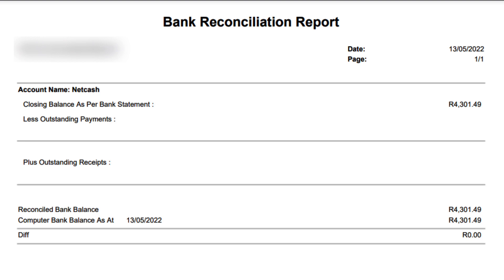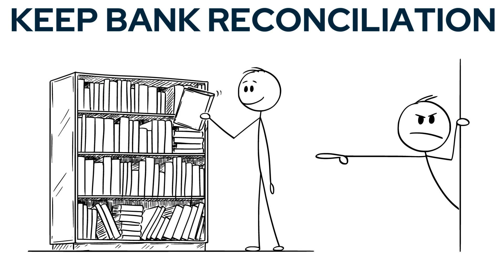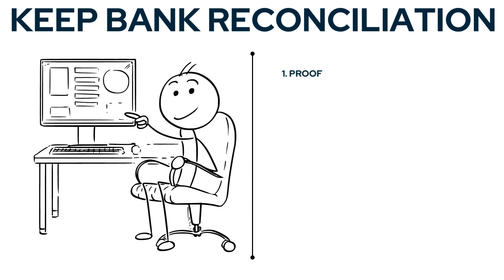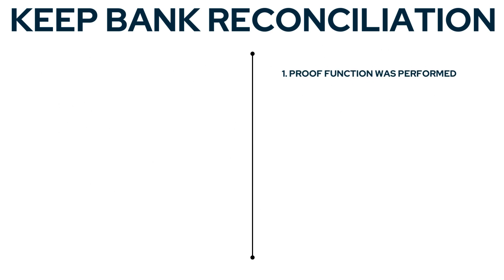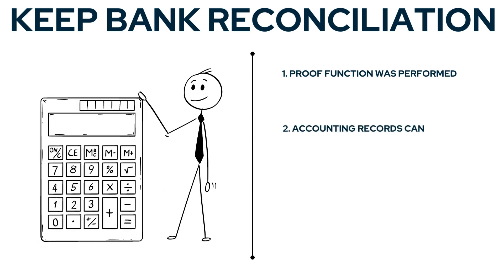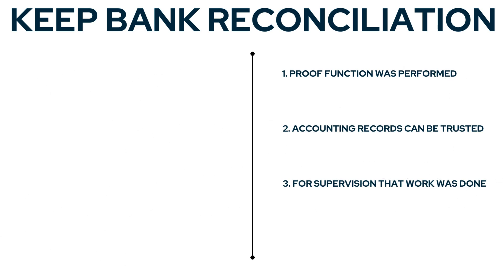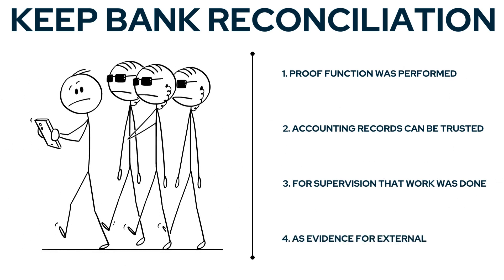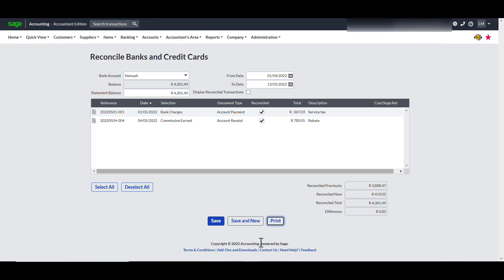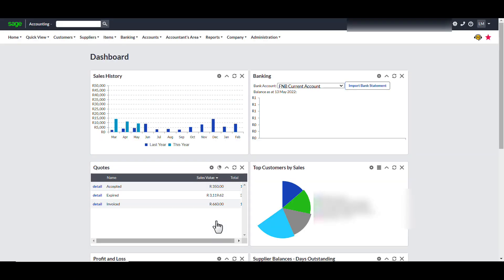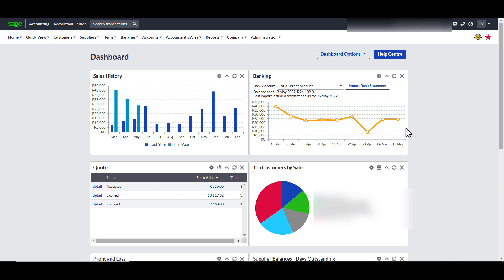I think it is important to save this report in a monthly management pack for the following reasons: as proof that the function was performed correctly; as proof that accounting records and reports can be trusted; as proof for internal management overseeing your work; and as proof for external auditors like revenue tax services. The last step of the bank reconciliation process is to save it. This is a simple example of a bank reconciliation in Sage accounting.